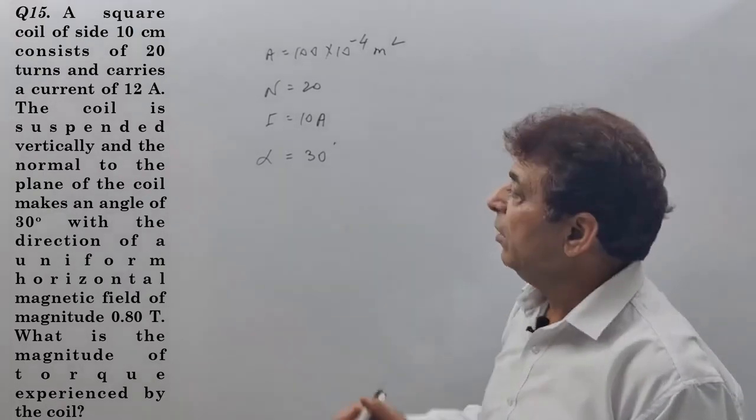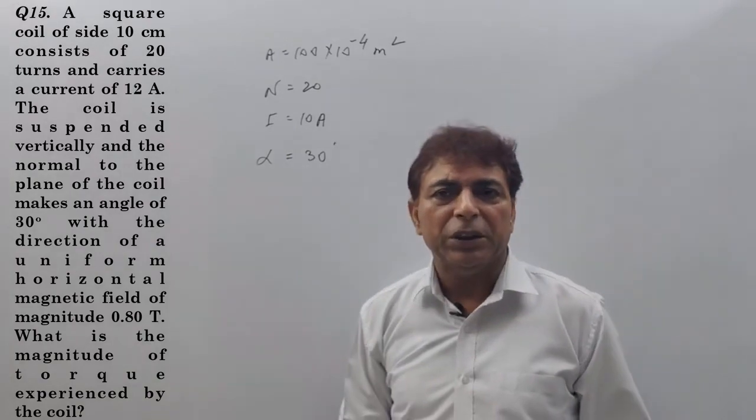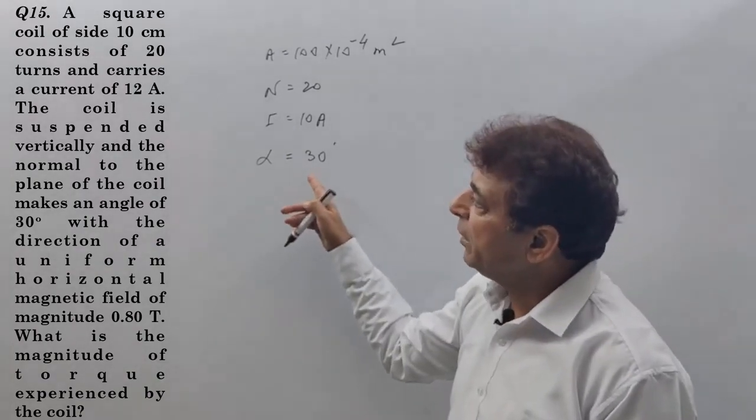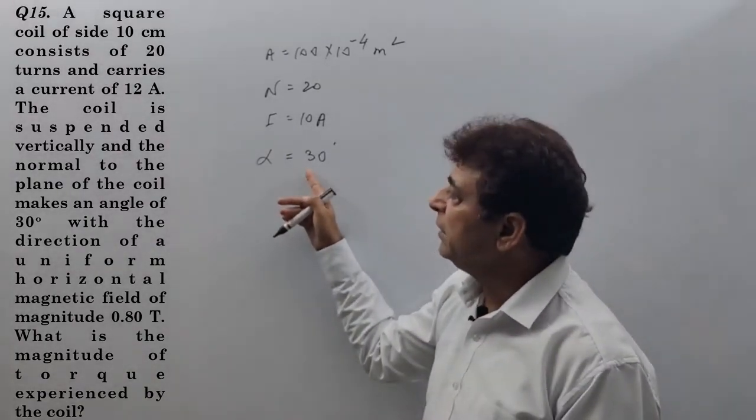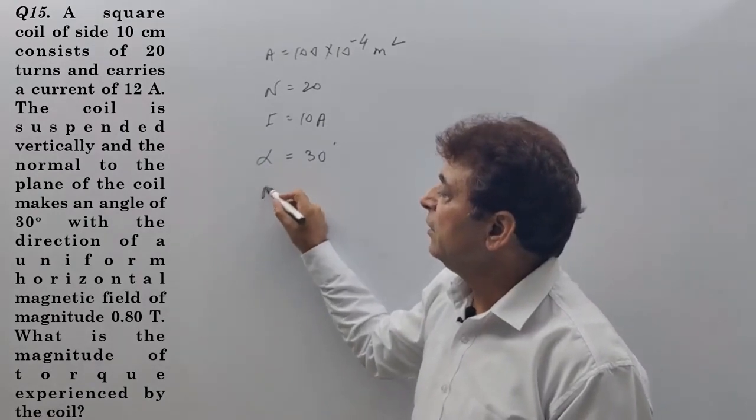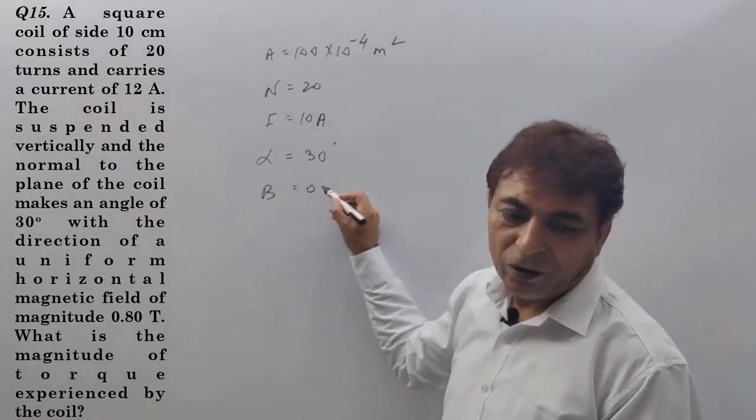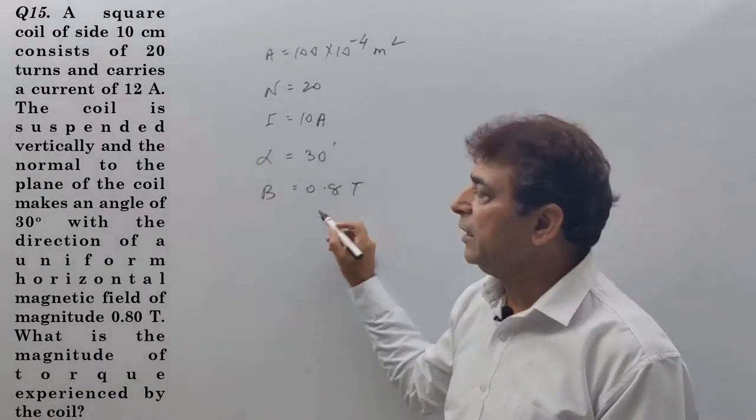This is very important. It is very clearly given in the question. Normal to the plane of the coil makes an angle of 30 degrees with a uniform magnetic field of 0.8 tesla.